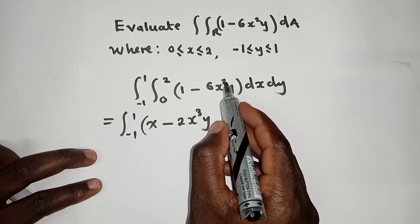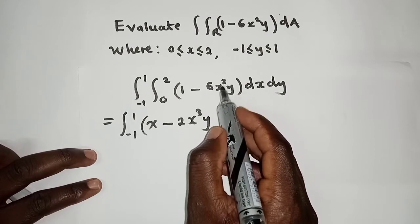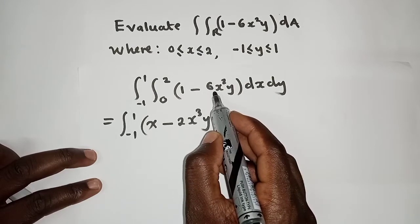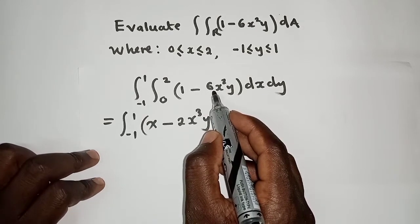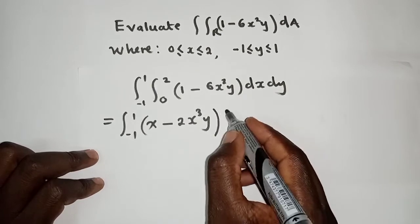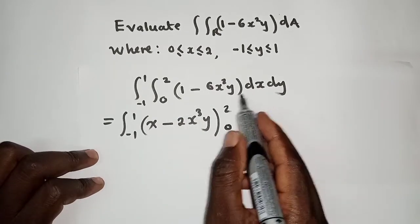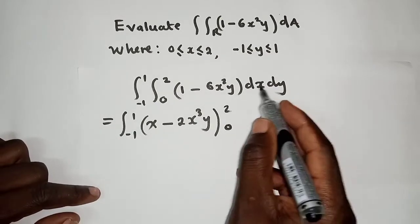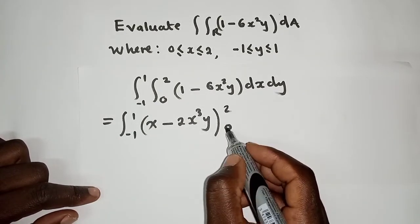We have 2X³Y. We are respecting X, so we said the 2 is power plus 1 which is equal to 3, and we divide by 3, giving us 2. And the limits - now we put them since we have integrated with respect to X - so we put the limits for X which is 2 and 0, dY.